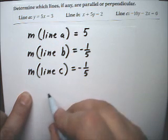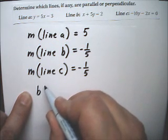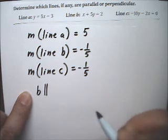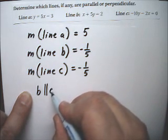So I would say if they're equal, that means they're parallel. So B is parallel to C, and that's the symbol for parallel.